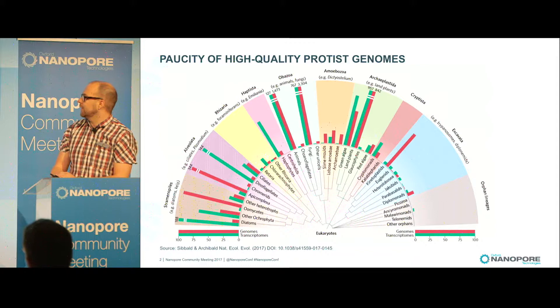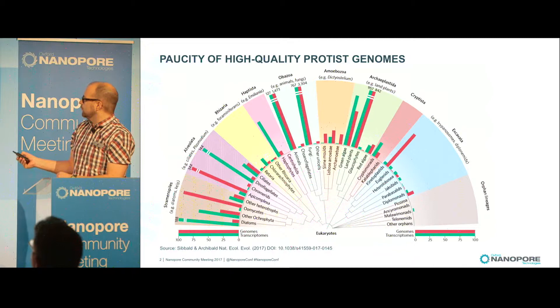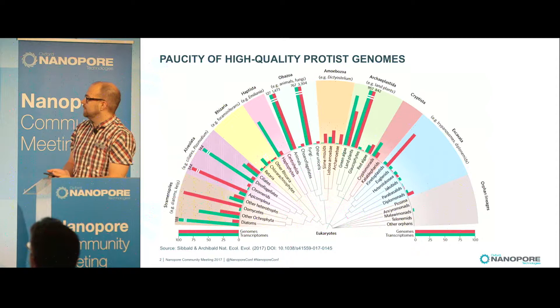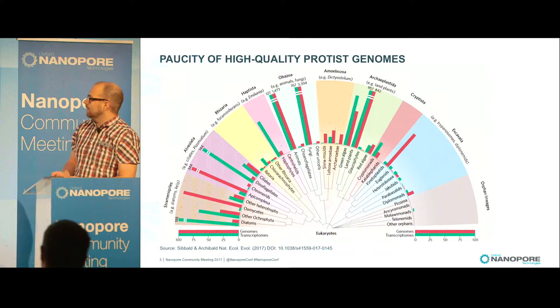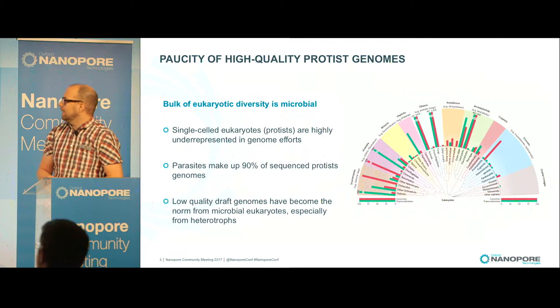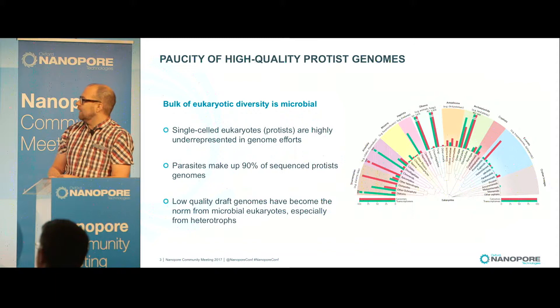Protists are single-cell eukaryotes, and if we look across a current view of eukaryotes and their genome sequences today, we can see that certain groups are overrepresented. Animals, fungi, land plants, and algae are all very well represented in genome sequences and transcriptomes, whereas many protists have only very few sampled genomes. Many of the protist lineages that have been sampled are from parasitic lineages, and we are interested in looking at free-living relatives of those parasite lineages to try to see how they have evolved to be successful as parasites.